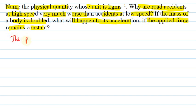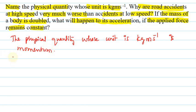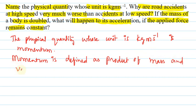The physical quantity whose unit is kilogram meter per second is momentum. What is momentum? How can we define momentum? Momentum is defined as product of mass and velocity, and we represent p as a vector quantity. p is equal to mv, mass and velocity, again vector. So this is first half question.